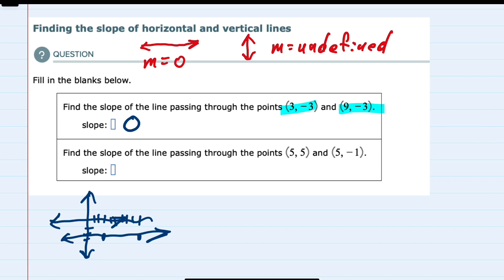And then for the second example, we have the point (5, 5), approximately here. And then the point (5, -1) has the same x value, 5, but a y value of -1 means this is a vertical line, so the slope here is undefined.